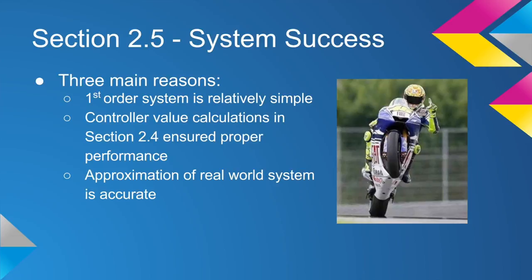This success can be attributed to three things. First, the first-order system was familiar. We were able to apply lessons we learned in feedback to this new system. Secondly, the controller calculations we performed in section 2.4 to find the Ki and Kp values ensured that the system response would be accurate. Finally, the drag approximation with wind and rolling resistance accurately represented the real world system.